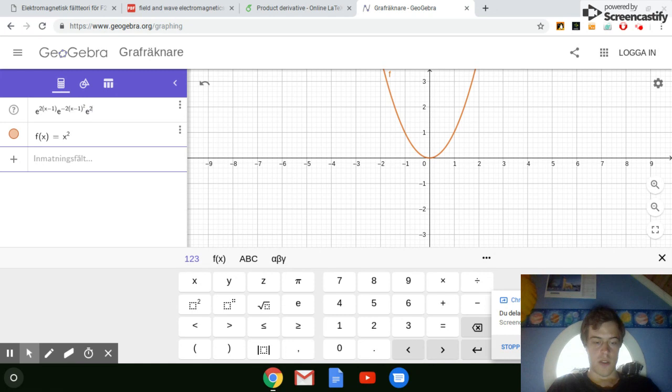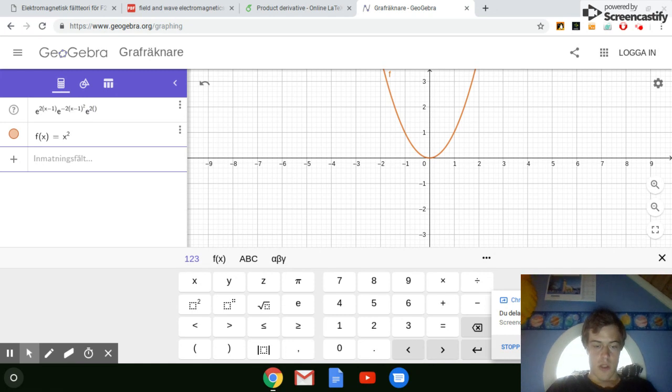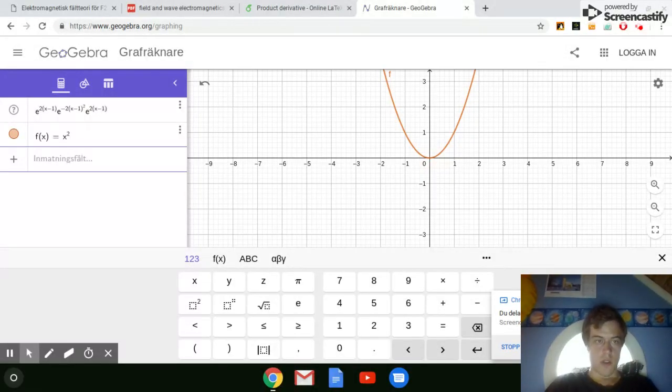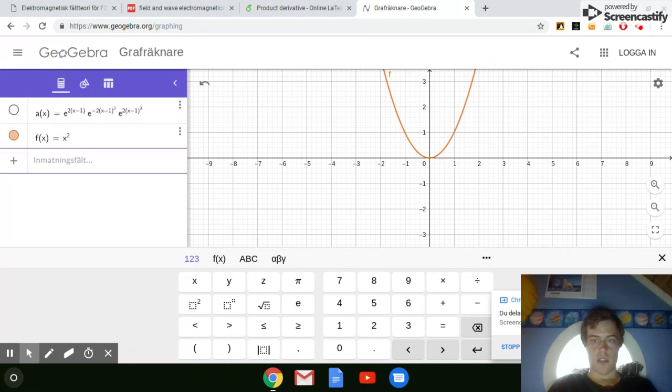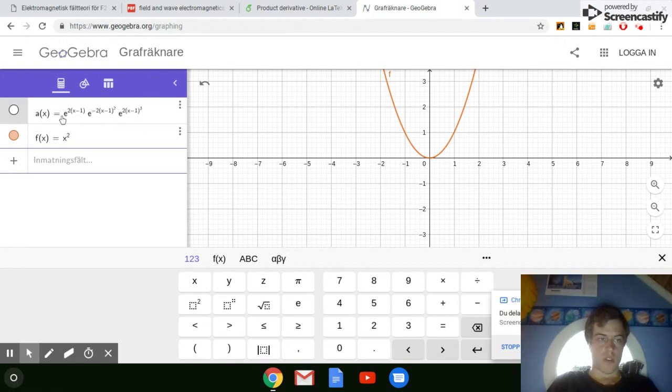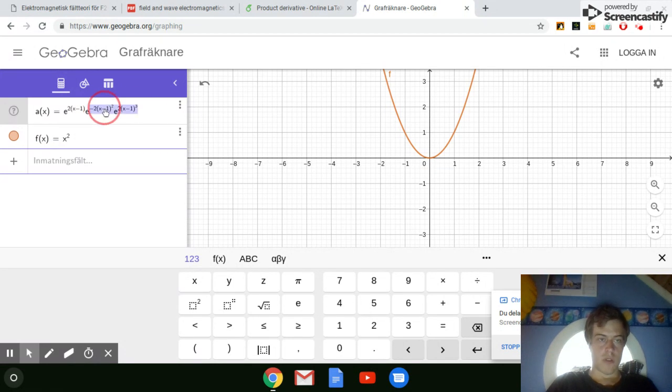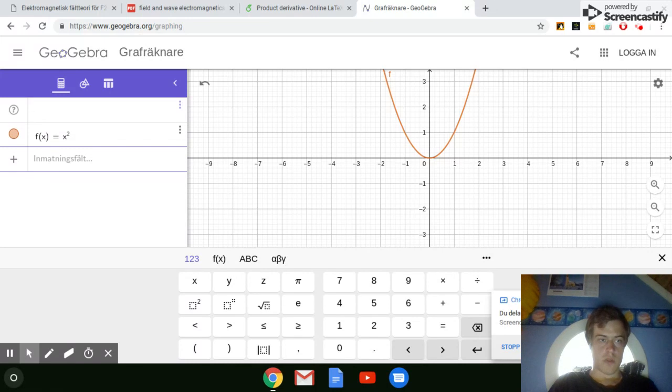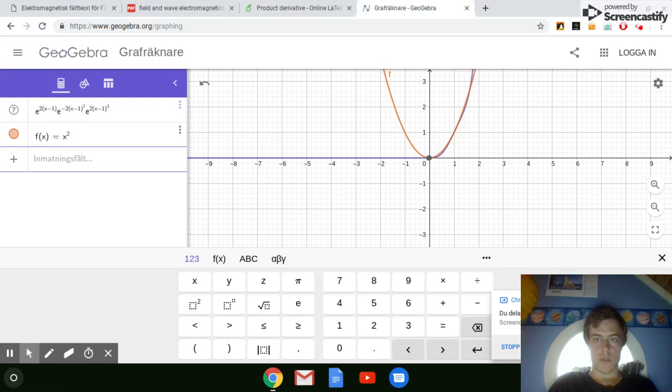We can do e to the 2 x minus 1 cube, which is going to be the next. Oops. Why doesn't it work? I'm not really sure why this doesn't work right now, but it should. Maybe if... Yeah, okay. There we have it.